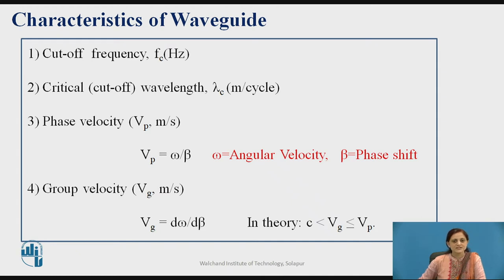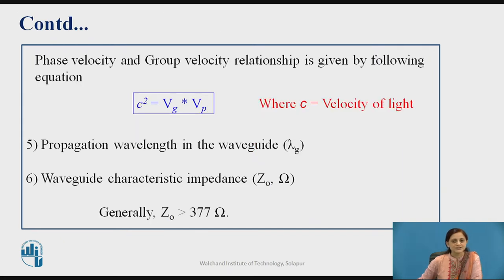Phase velocity is the ratio of omega by beta — that is, angular velocity divided by the phase shift. Group velocity is the velocity considered for a group of waves, given by the rate of change of angular velocity with respect to the phase shift. Generally, Vg has a value between C and Vp, where C is the velocity of light. Vp and Vg are related by the equation: Vp into Vg equals C squared.